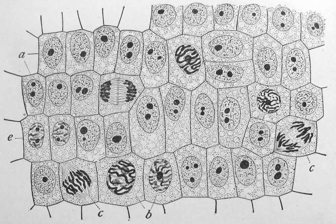Cells consist of cytoplasm enclosed within a membrane, which contains many biomolecules such as proteins and nucleic acids. Organisms can be classified as unicellular, consisting of a single cell including bacteria, or multicellular, including plants and animals. Humans contain more than 10 trillion cells.